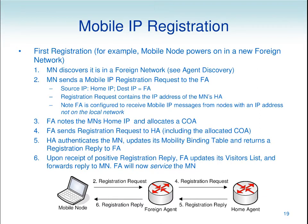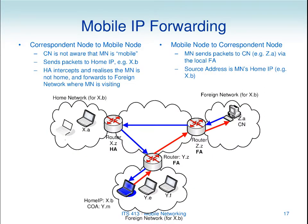This is the procedure from when the blue node enters this network. It sends a registration request message to the foreign agent, which sends it to the home agent. The home agent records where that mobile node is, including the foreign agent address and the care of address, then sends back a reply. When that's finished, the foreign agent has a visitor in its visitors list, and the home agent has the knowledge of where that mobile node is. Later when data arrives at the home agent, it will know where to forward it.